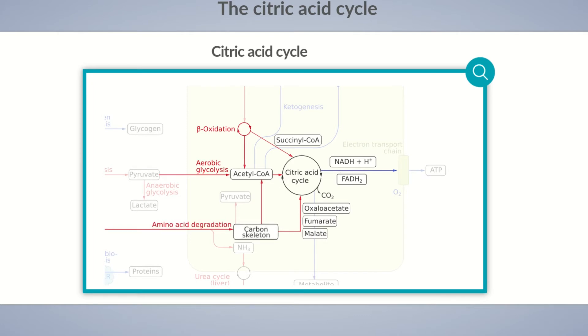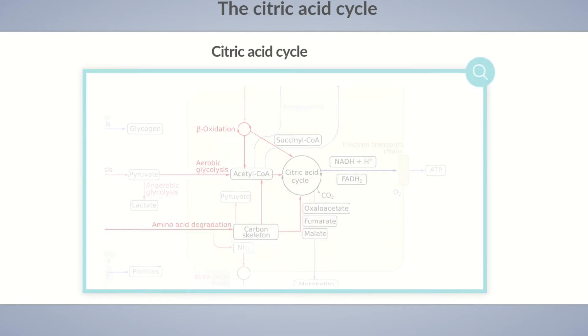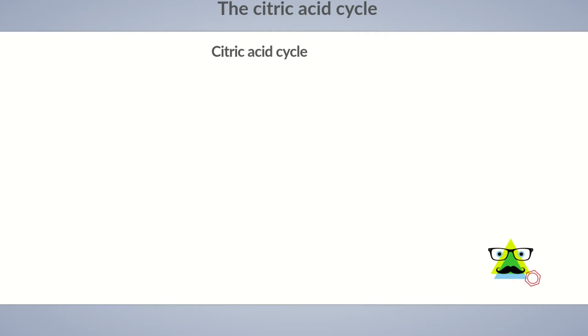The citric acid cycle occurs in eight steps. We'll now introduce them to you in detail. By clicking on Dieter's red molecule, you can take a look at or hide the molecular structures at any time.